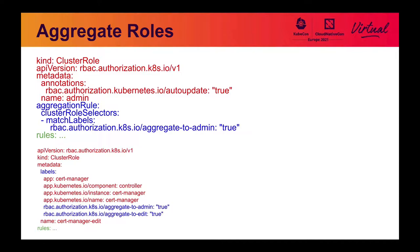So instead of having one big giant static role that you have to update as new objects get created, you create another cluster role, add the aggregate-to-admin label, and the role aggregator adds those permissions to the admin cluster role. If you're defining a custom resource for an operator to deploy things into your cloud, instead of having to define a cluster role and assign it to everybody, you add this label to the cluster role and anybody who's an admin will be able to create that object.